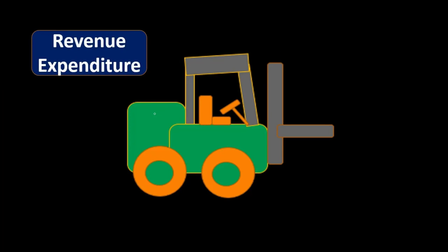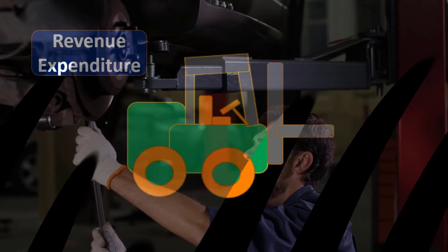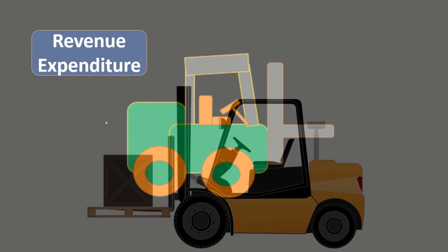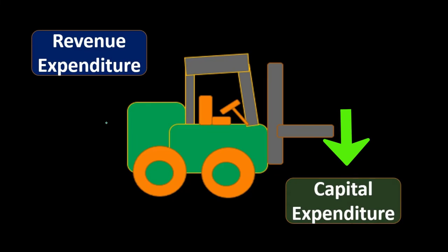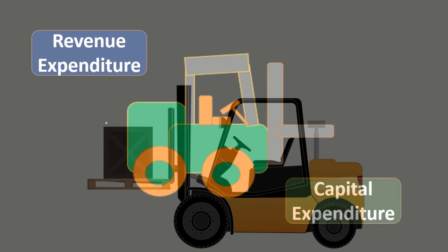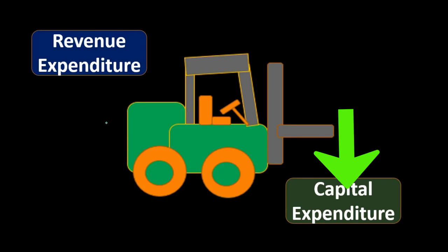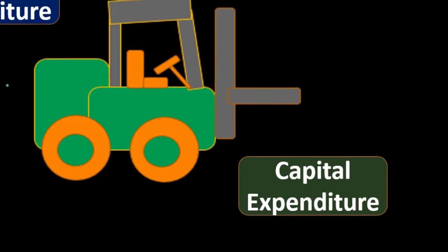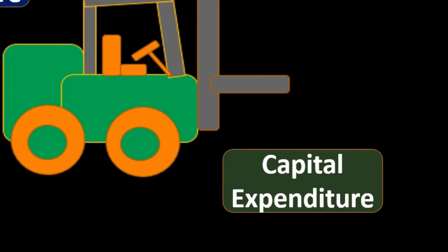For our forklift, revenue expenditures are things like oil changes and normal maintenance — things that keep the forklift in its normal operating condition, not items that extend its life or represent extraordinary betterments or changes in functionality. Capital expenditures, by contrast, include a complete overhaul, replacing the entire engine, or modifying the forklift to perform a substantially different function. If the expenditure extends the useful life or substantially changes the functionality of the forklift, we capitalize it and depreciate it over the useful life.